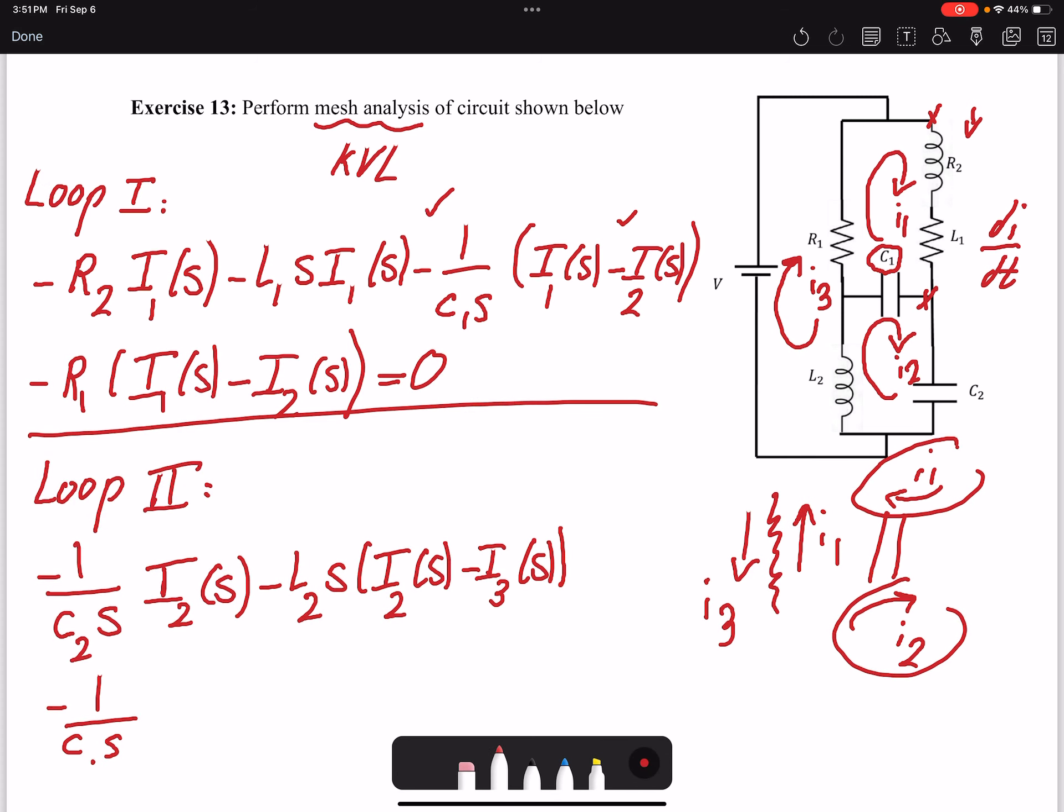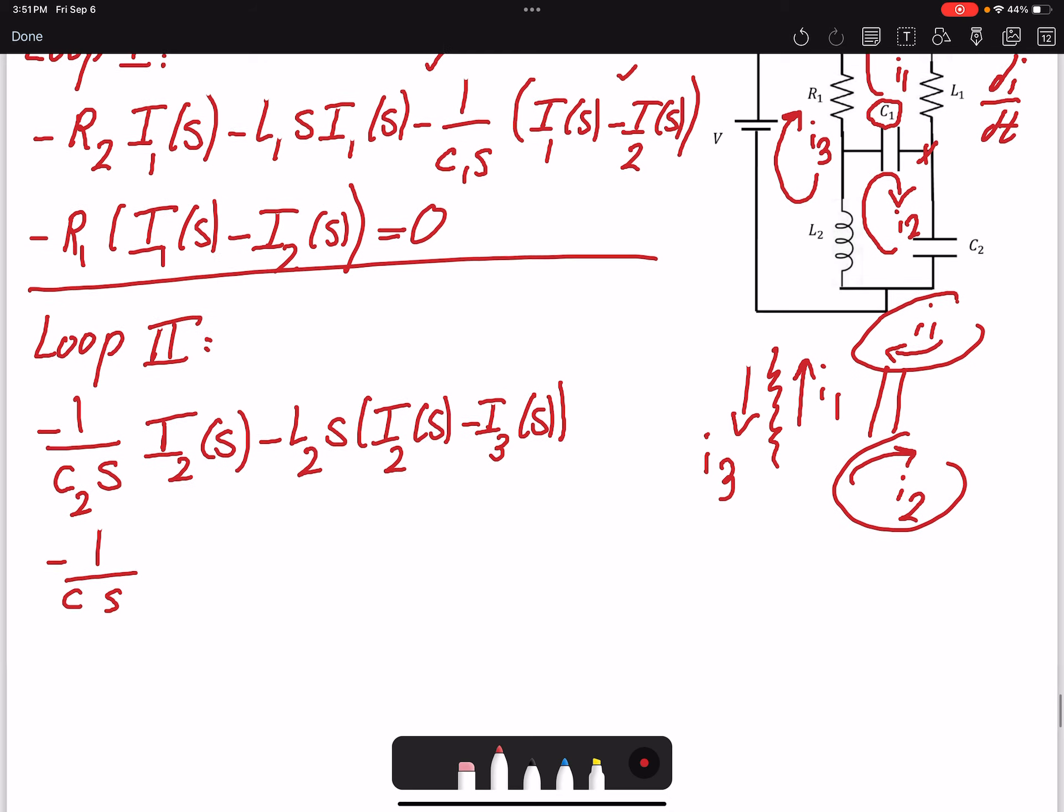I'm talking still about this guy here, and I have I2(s) minus I1(s) equals 0. So I had two capacitors and then one inductor that I included here. That was Loop 2, now I can move to Loop 3.